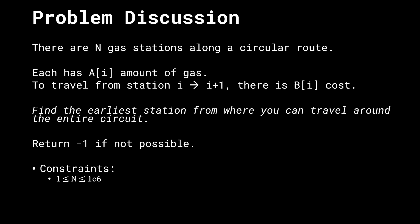The goal of this problem is to find the earliest station in terms of indices from where we can travel around the entire circuit. You start from a particular index i, which is the lowest possible index, such that you can start from i, make the journey, and come back to i. We have to return minus one if it's not possible.